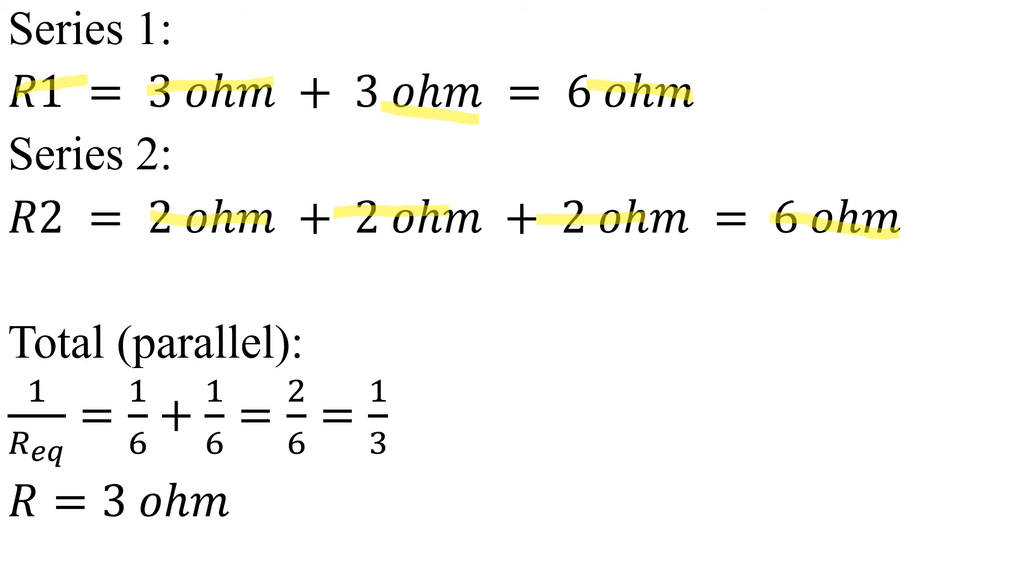So the total resistance, the total equivalent resistance that is in parallel, that will be 1 by R equivalent is equal to 1 by 6 plus 1 by 6, that is equal to 2 by 6, that we can simplify to 1 by 3. So R will be equal to 3-ohm, and that's your answer.